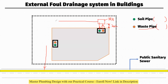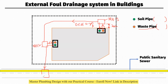A single pipe will be running from this manhole, and it will come here with a slope — generally 0.5% or 0.7%. We generally maintain less slope. The waste pipe connects to the gully trap, and from the gully trap it connects to the manhole. So this is manhole two and this is manhole one. From manhole two it will directly go to the public sanitary sewer.